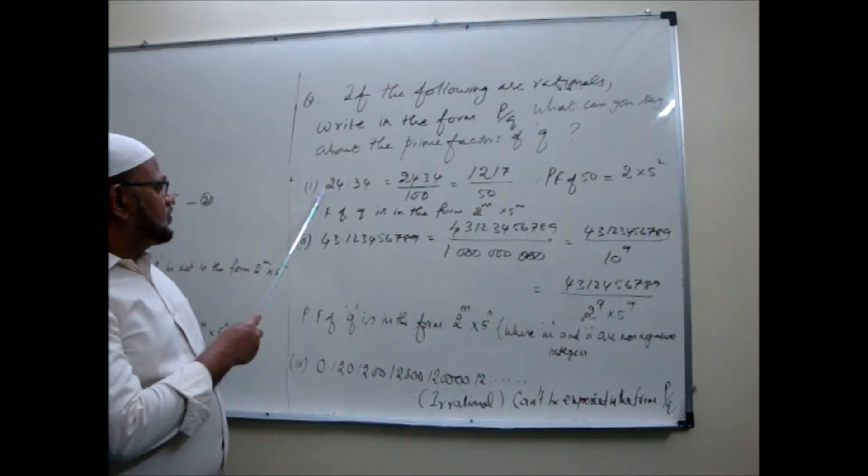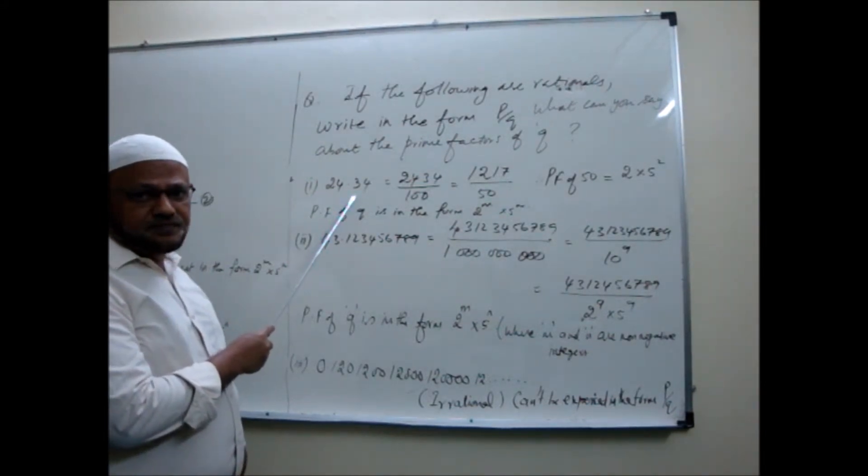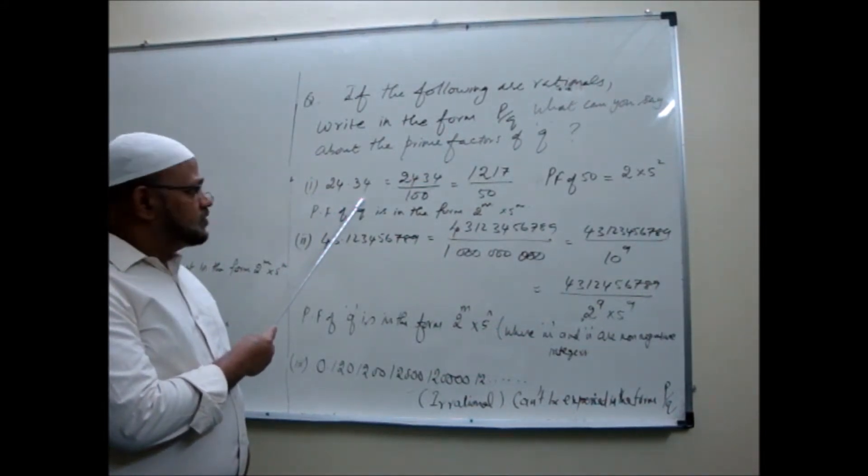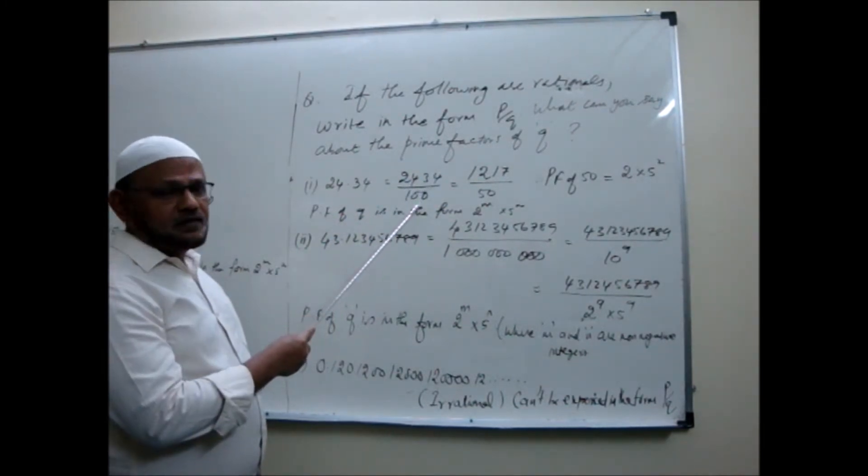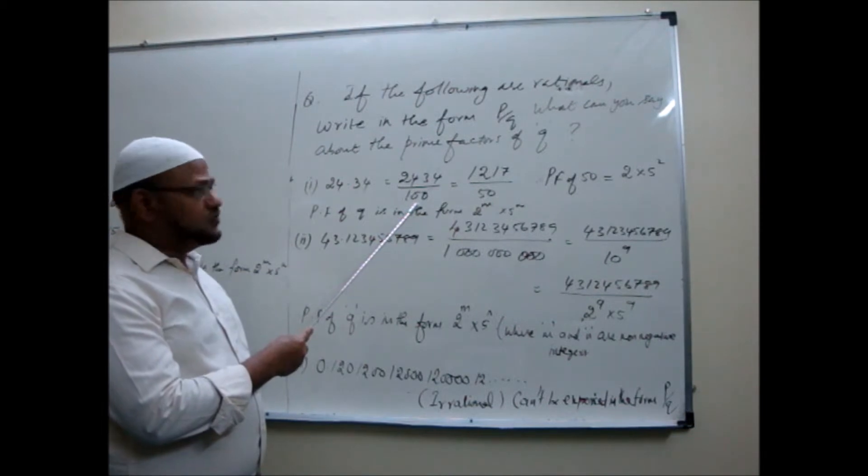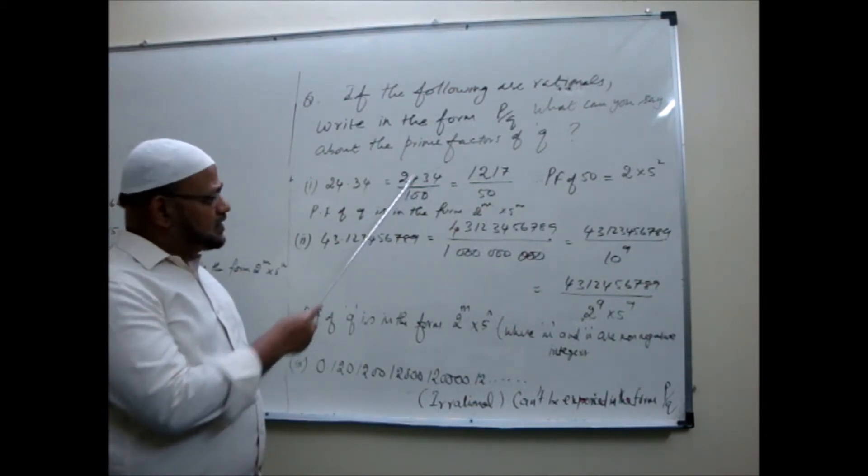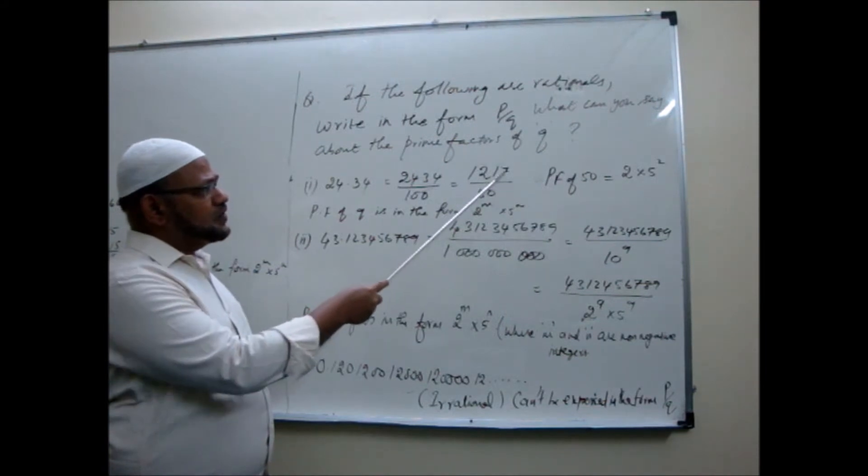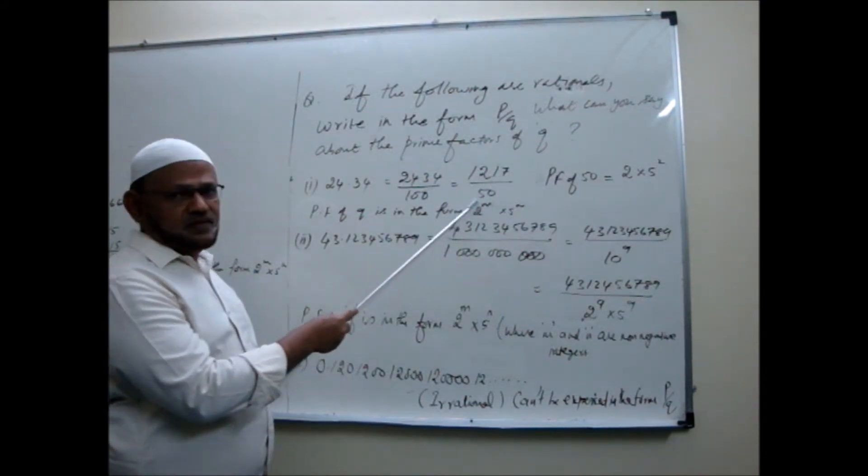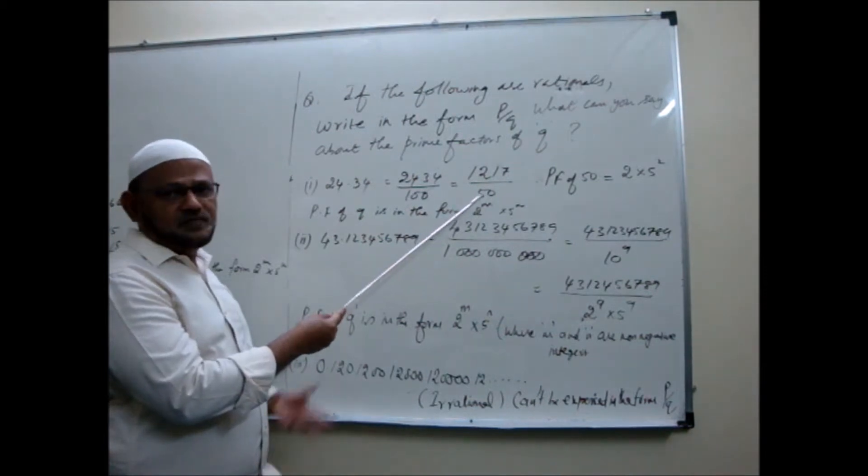Let us see this one. 24.34. What kind of decimal? Terminating. So what will we write? 2434 by 100 as fraction. Two decimal digits, so 100 denominator. Simplest form you bring, P by Q. So 1217 by 50. This is the P by Q form. Finished.